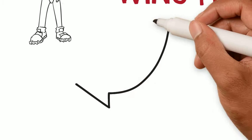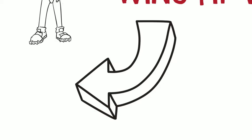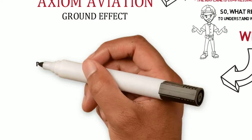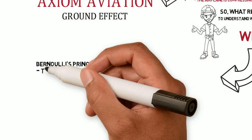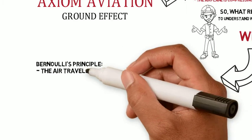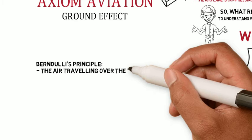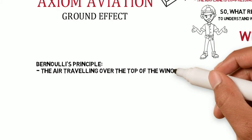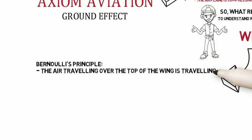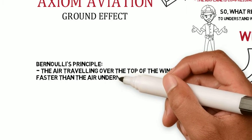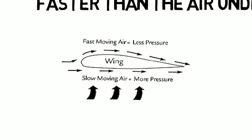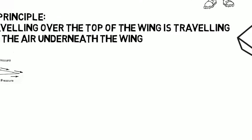Wing tip vortices are a phenomenon caused by Bernoulli's principle. Bernoulli's principle states that the air traveling over the top of the curved surface of the wing is actually traveling faster than the air underneath the wing. That creates a low pressure above the wing, and because of that speed difference, we get low pressure above the wing and high pressure below the wing.